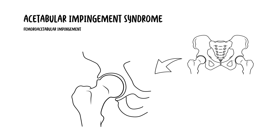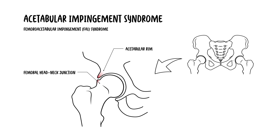Acetabular Impingement Syndrome, more commonly referred to as femoral acetabular impingement, is a clinical condition where abnormal contact between the femoral head-neck junction and the acetabular rim leads to hip joint damage. It predominantly affects young to middle-aged active adults and is a well-recognized cause of early-onset osteoarthritis of the hip.